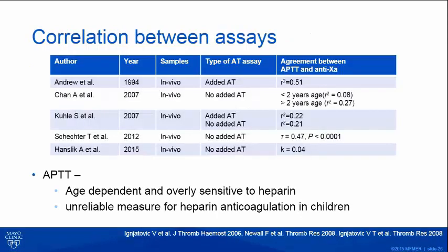Another problem is the correlation between assays. For example, the APTT and anti-Xa assay when used to determine heparin anticoagulation — multiple studies show that the correlation between APTT and anti-Xa levels while measuring heparin anticoagulation in the pediatric population is not great. APTT by itself can be overly sensitive to heparin and might be an unreliable measure of heparin anticoagulation, and this is age-dependent.